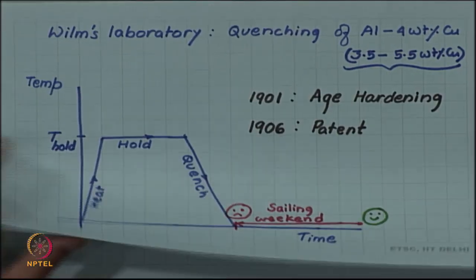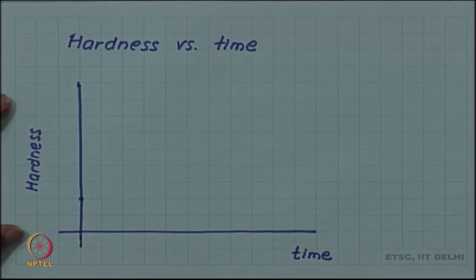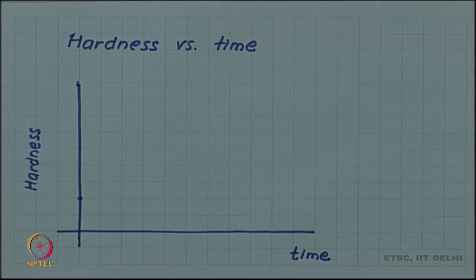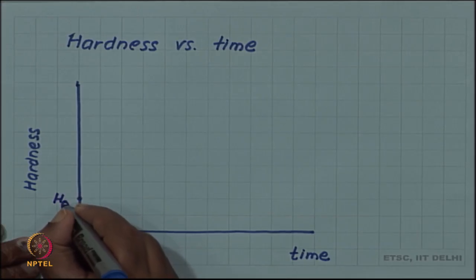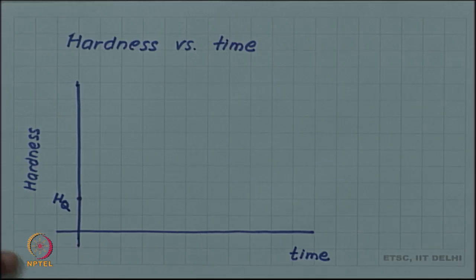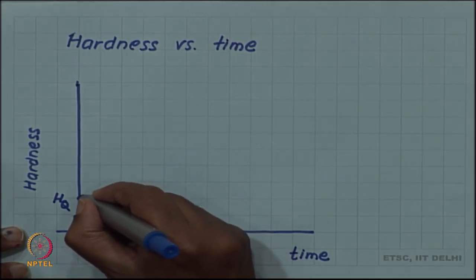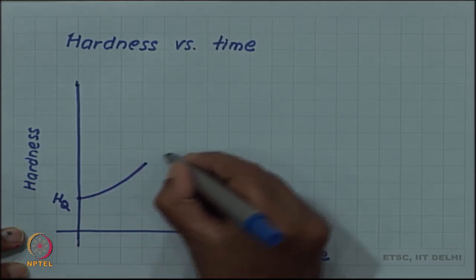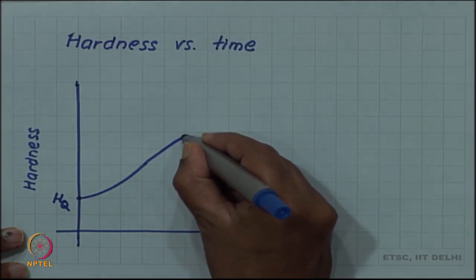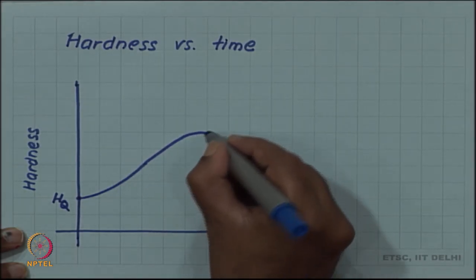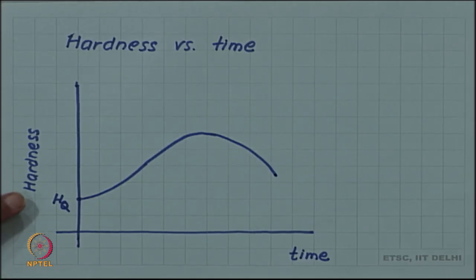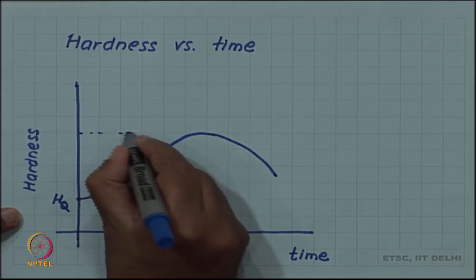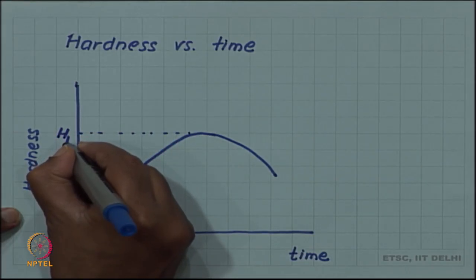Let us look at what he found on aging or how does the hardness change as a function of time. After quenching there is a hardness value and let us call that hq, hardness in the quenched state. And then as time passes the hardness starts increasing and it starts going up, but then at some point it reaches a peak and then decreases. Let us call this hardness the peak hardness.